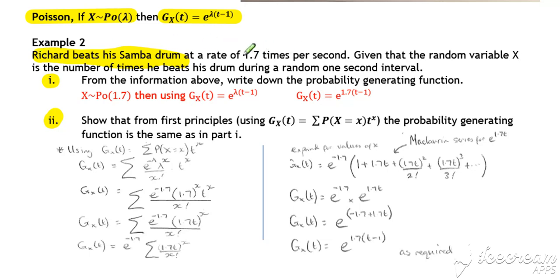And then, we've got a lambda value of 1.7. So, here's our Poisson, there's our standard quotable result, so you just substitute your lambda value into that standard result. Okay, so you can write down your probability generating function straight off.